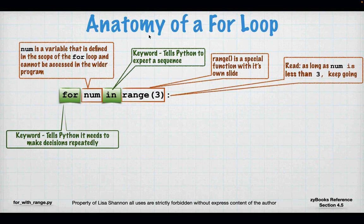Now I have my keyword `in`. In just tells Python to expect a sequence — it can be a list, a dictionary, or a range. A range is just a function in Python that creates a sequence of numbers. The way you read `for num in range(3)` is: as long as num is less than three, keep going — because three is not inclusive. With range, unless you tell it differently, you start at zero and end at a number that's not inclusive, because zero, one, two is three numbers.